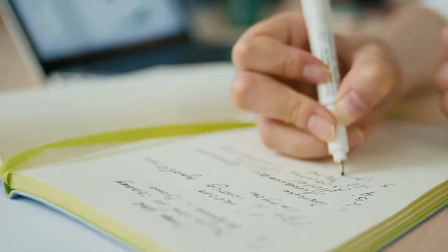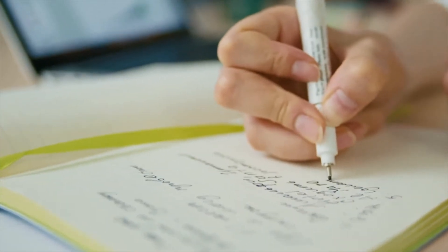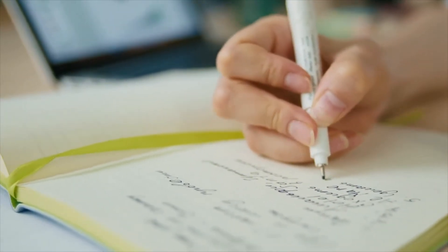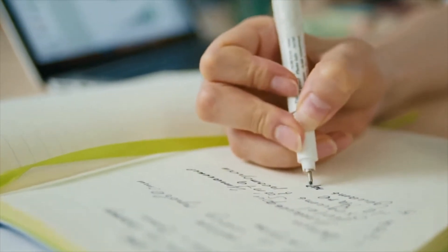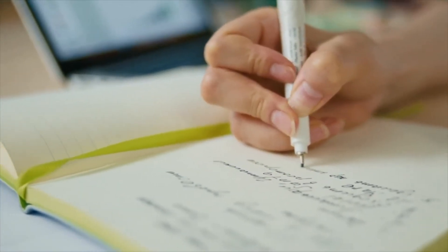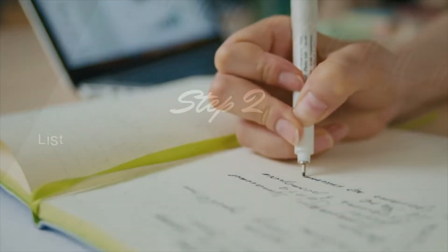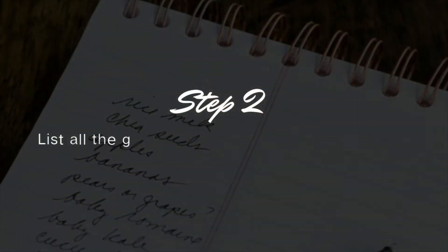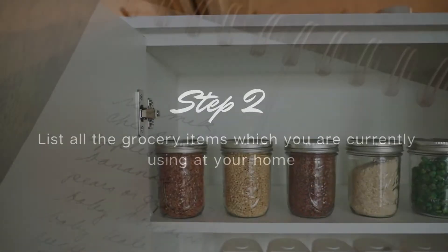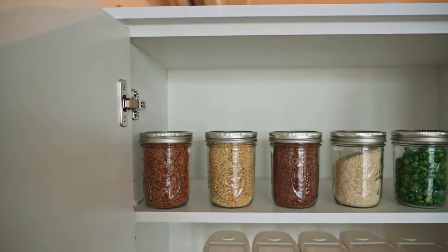Keep a dedicated book for your kitchen planning — not only for a grocery list, but we can also use this book for all the meal plans, listing all the favorite recipes, YouTube channels, etc.